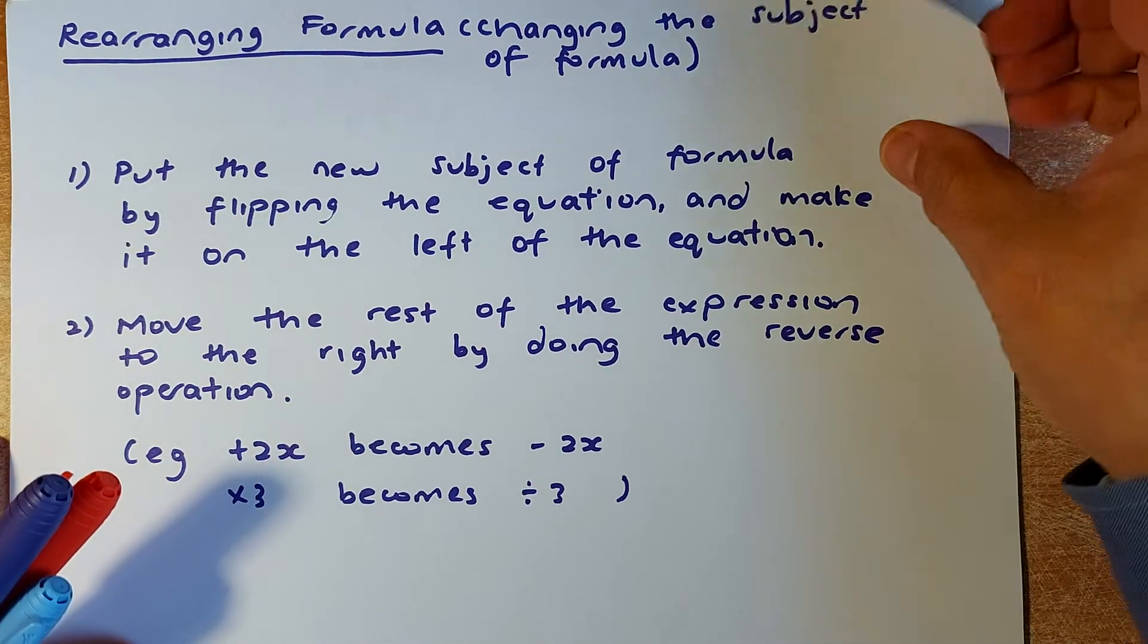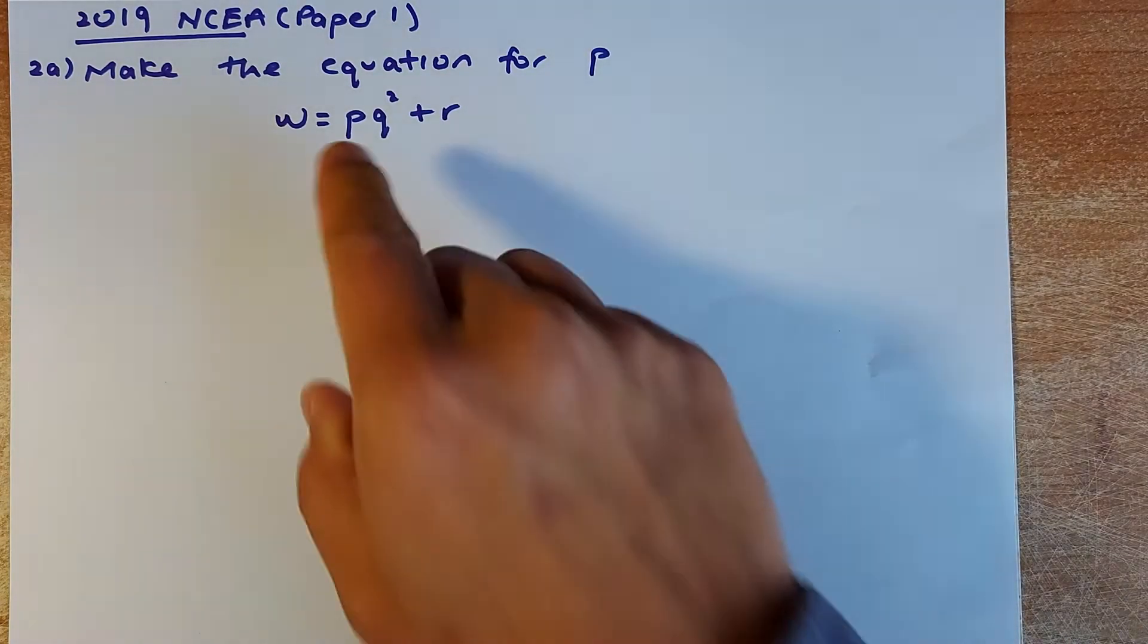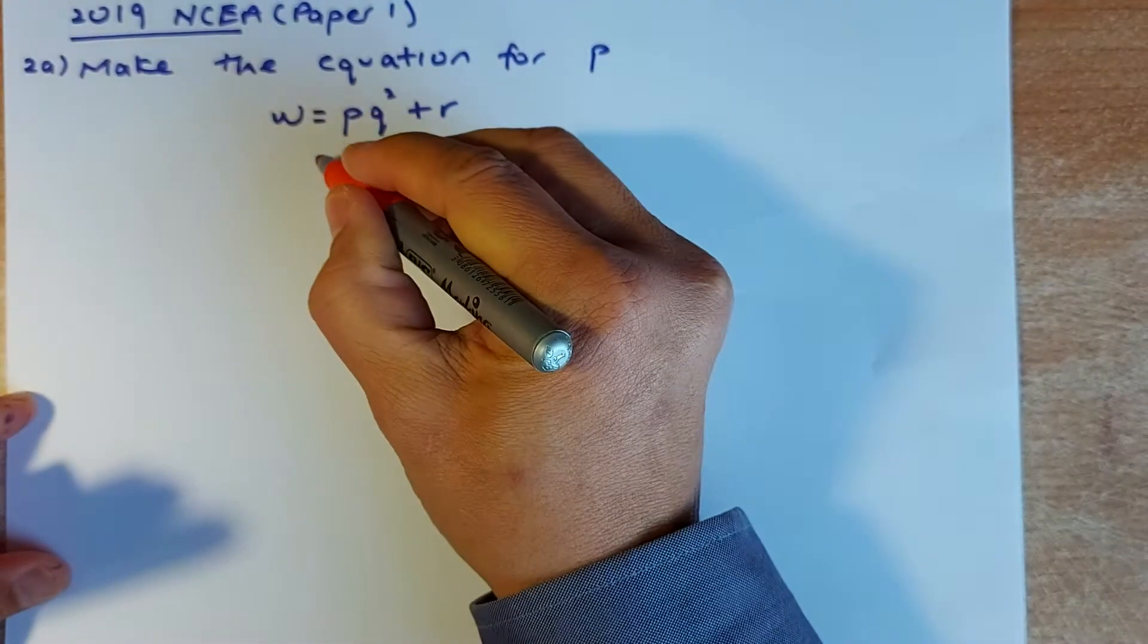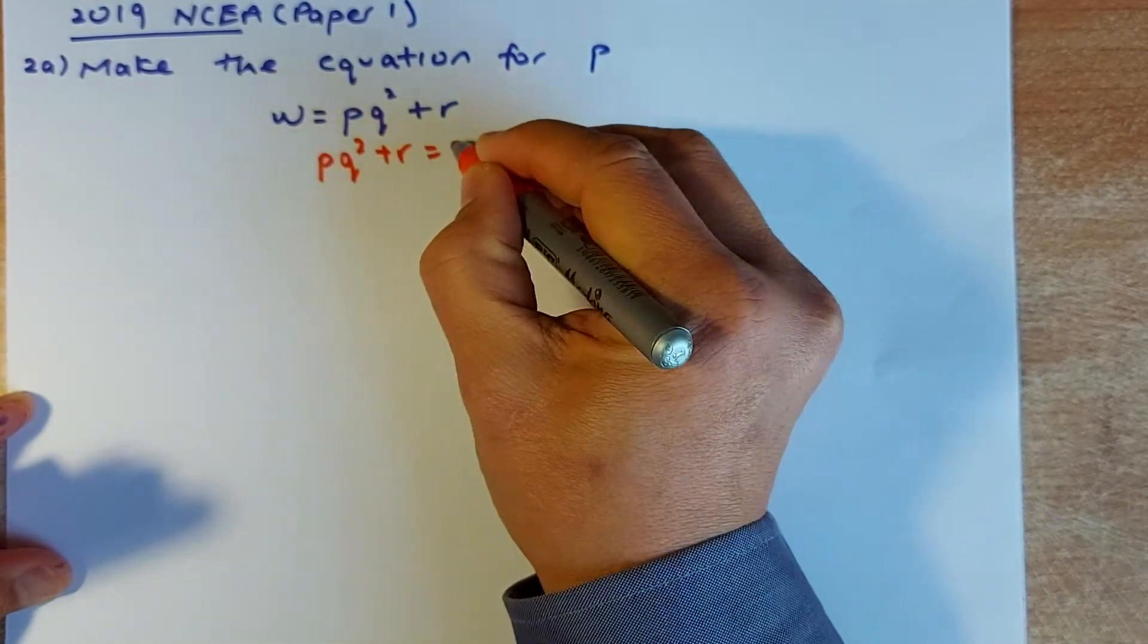We shall look at some examples. We shall first look at the 2019 NCEA paper. They asked you to make P the subject of formula. So the first thing you do, you want P on the left. So what you do, you are going to swap the equation. PQ² + R equals to W. Just make the W on the other side of the equation.